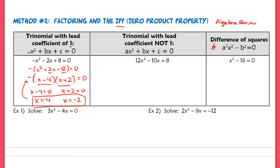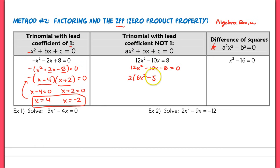When the lead coefficient is not 1, you do something slightly different. The first thing you always want to do is make sure that you get 0 on one side, so you move terms over. Looking at this problem, I can factor out a 2 — always take out a GCF first. If I take out that 2, I am left with this on the inside, and this 2 stays on the outside. Now let's work on factoring. I'm going to find two numbers that multiply to negative 24.